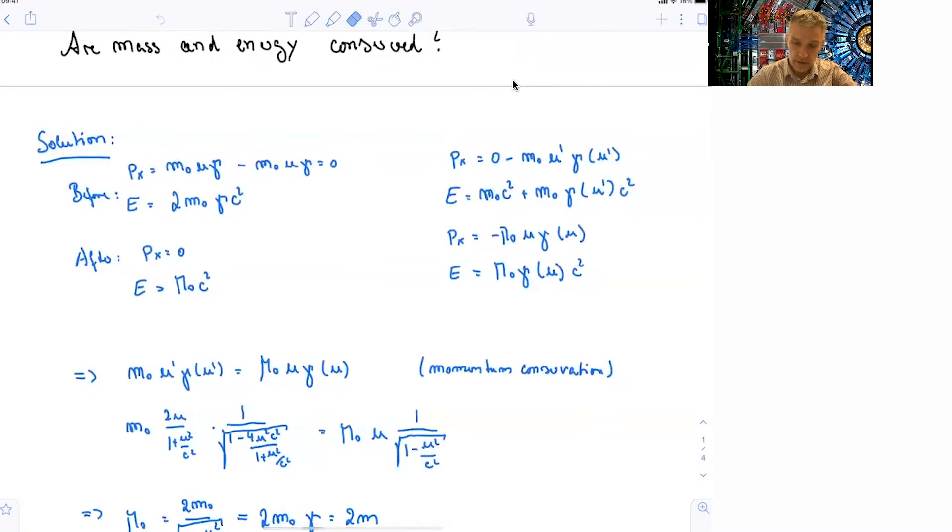So I'm describing this here first in the center of mass frame, where the x, just talking about the x component here, the x momentum is 0, which is equal to the mass times u times gamma minus the mass times u times gamma. That's 0.